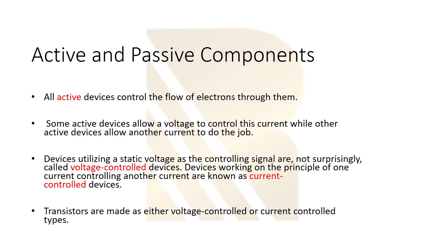All active devices control the flow of electrons through them, and there are two types. Some active devices allow voltage to control the current — by changing the voltage we control the current passing through the device. In other devices, we use a current to control the current through the device. The first type we call voltage-controlled, and the second we call current-controlled.